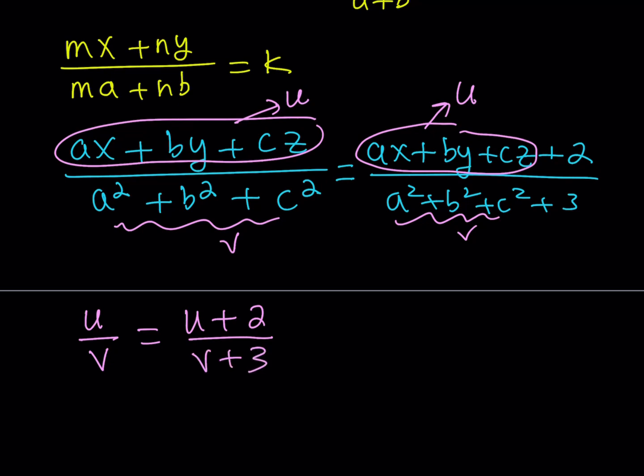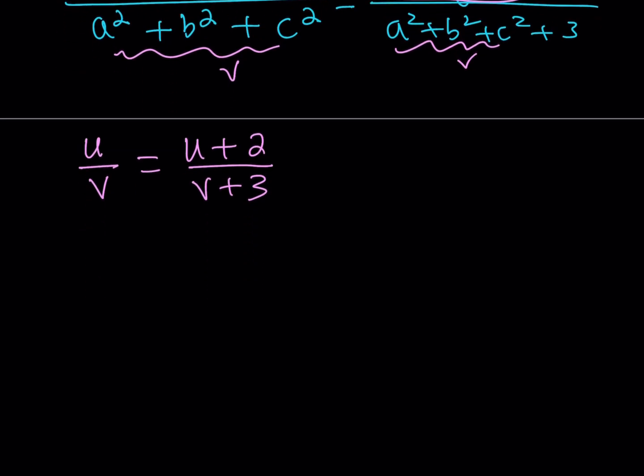So what we have is much simpler: u over v equals u plus 2 over v plus 3. Now this shows you the power of substitution in math. It's very powerful and a very common technique. Let's cross multiply now. This gives us uv plus 3u equals uv plus 2v, so 3u equals 2v.